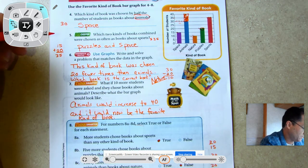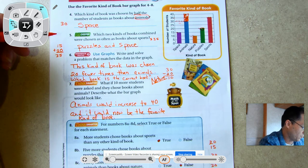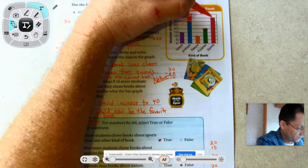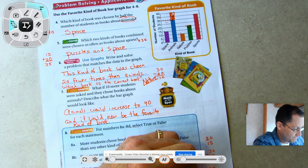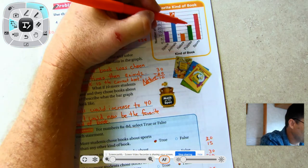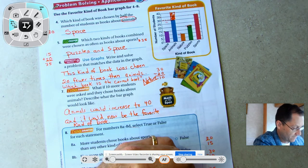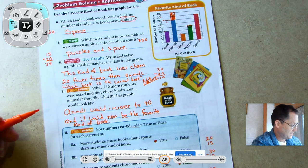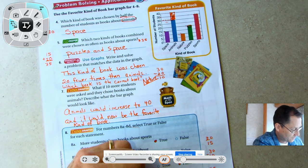15 fewer students chose books about puzzles than books about sports. Sports was 35, puzzles is 20. We subtract that, we get a difference of 15. So that is also true.